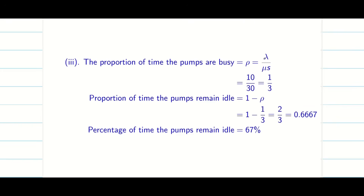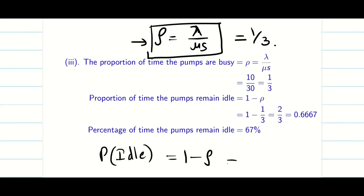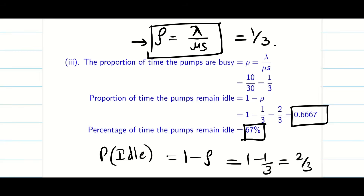Finally, the proportion of time the pumps are busy is ρ = λ/(μs) = 1/3. The proportion of time the system is idle is 1 − ρ = 1 − 1/3 = 2/3, which is 67%. We have now found all the required values. Hope you understand how to solve problems on the multi-server model — see you in the next video!